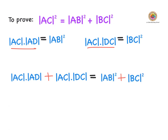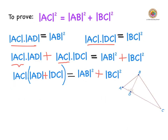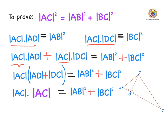We can factorize the left-hand side: I can see AC in both terms, so factorizing gives AC times (AD plus DC), which still equals AB squared plus BC squared. Going back to our diagram, we can see that AD plus DC is equal to all of AC. So AC times AC equals AC squared, which equals AB squared plus BC squared. We are actually finished.